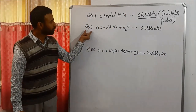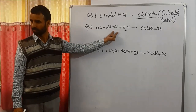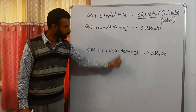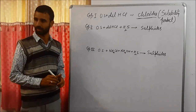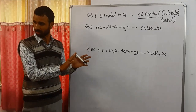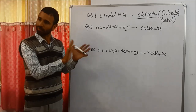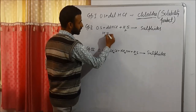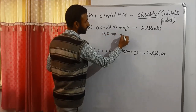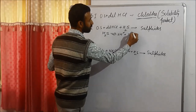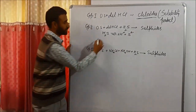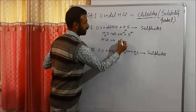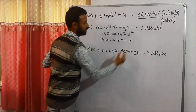In case of group 2, we add HCl; in case of group 4, we add ammonium hydroxide. What is the difference? Both are precipitated as sulfides. But H₂S gives H⁺ ions and sulfide ions, and HCl, being a strong acid, gives H⁺ and chloride ions.